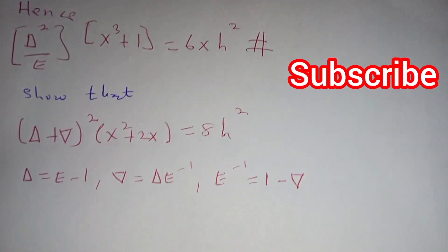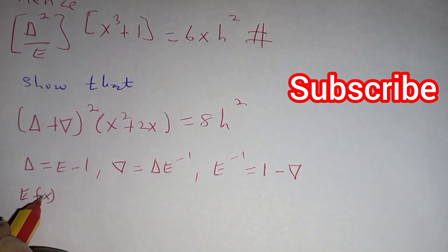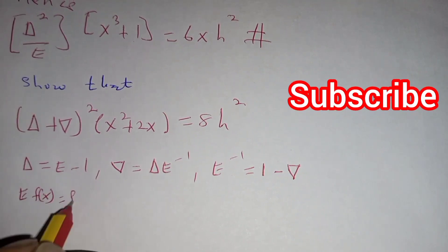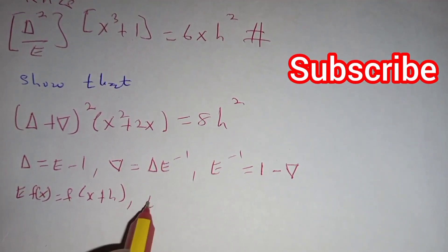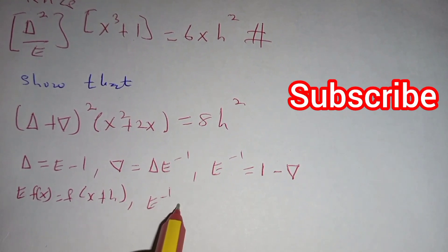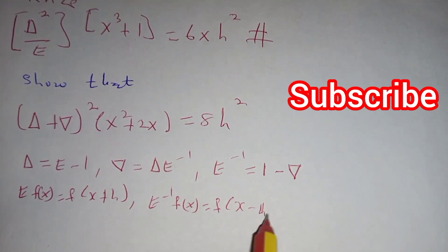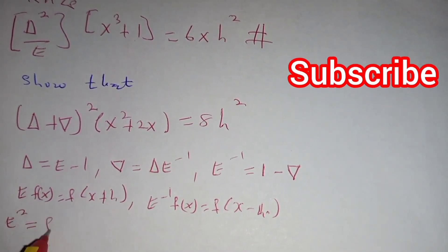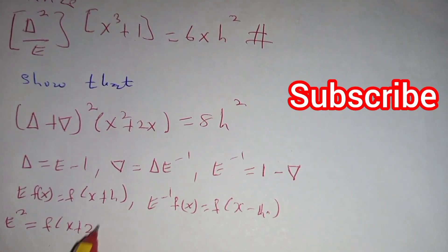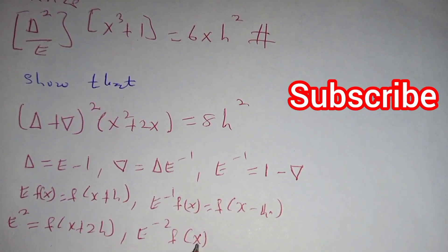And finally, make use of that hint. Also remember the definition of E f(x) is equal to f(x plus h), and also the definition of inverse E f(x) is equal to f(x minus h). Also E squared is equal to f(x plus 2h), and E to the negative power 2 f(x) is equal to f(x minus 2h).